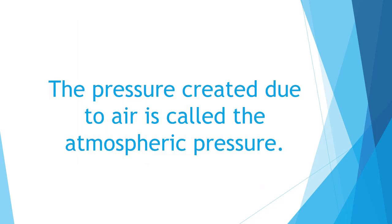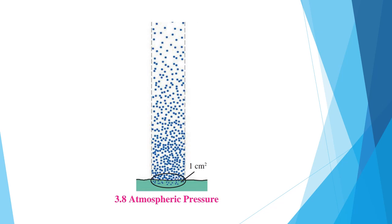The pressure created due to air is called atmospheric pressure. Imagine that a very long hollow cylinder of unit cross sectional area is standing on the surface of the earth and it contains air. Weight of this air is the force applied in the direction of the centre of the earth. This means that the atmospheric pressure is the ratio of this weight divided by the area of the surface.